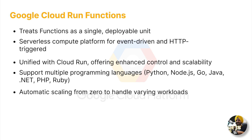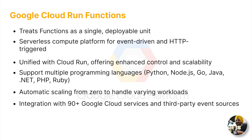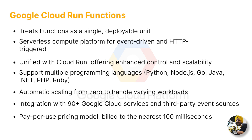There are 90-plus Google Cloud services that integrate with Cloud Functions, and the billing model is pay-per-use, billed to the nearest 100 milliseconds. This is extremely granular — VMs increment by one second after rounding to one minute, but Cloud Run Functions rounds to 100 milliseconds. So the shorter and more atomic your function, the better. That is Cloud Run Functions.